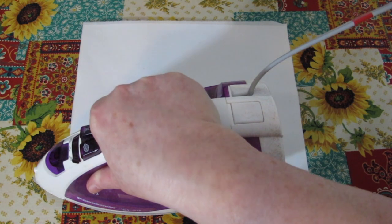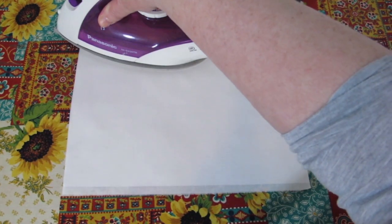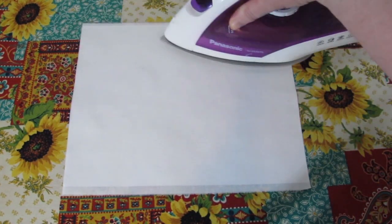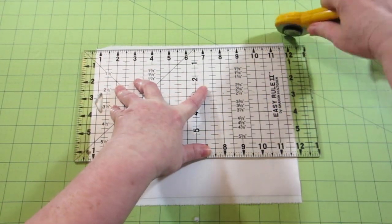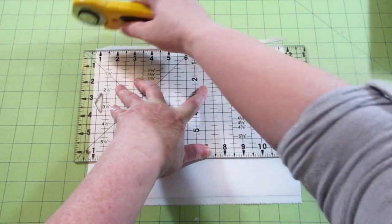Once the fabric is firmly attached to the freezer paper, place the sheet with the paper side facing up on a cutting board and trim away the excess fabric. Make very sure there are no loose threads hanging off the edges.